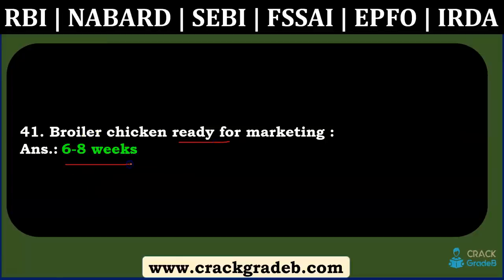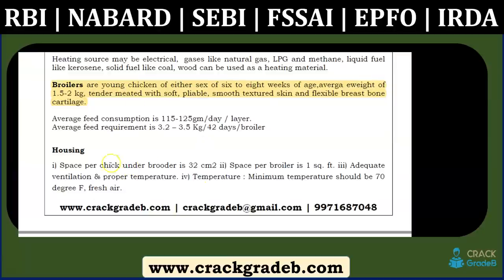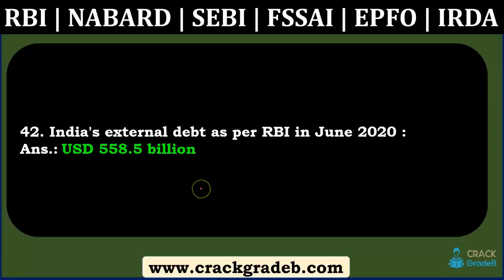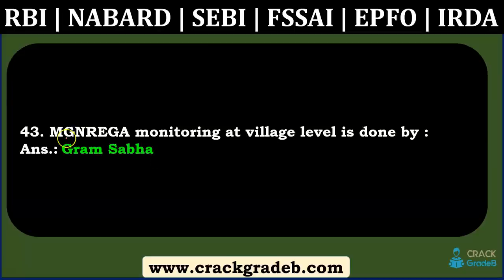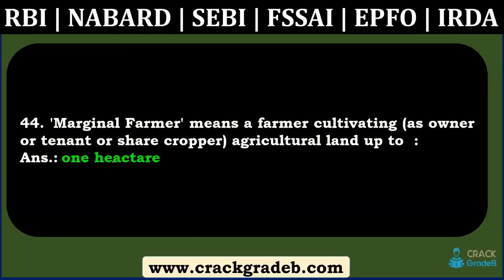Broiler chicken ready for marketing at six to eight weeks — we discussed this in our last MCQ video and it is covered in the static Animal Husbandry part. India's external debt as per RBI in June 2020 — USD 558.5 billion — was covered in the existing bank report. MGNREGA monitoring at village level is done by GRAM SABHA — we inadvertently missed this in the updated scheme document, but it was covered in the previous version.